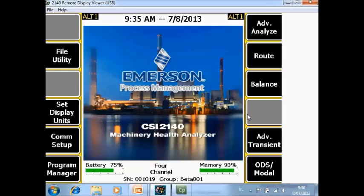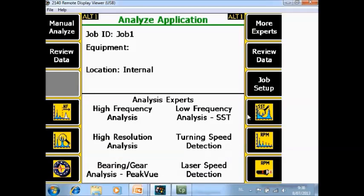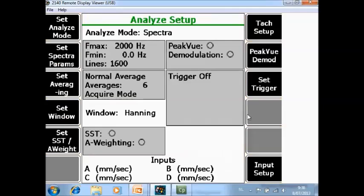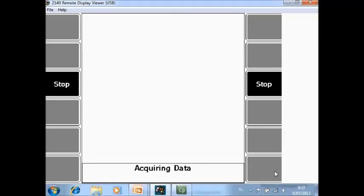On the home screen of the analyzer go to F7 Advanced Analyze, go to F1 Manual Analyze, and as you can see here I will measure from 0 to 2000 Hz 1600 lines with 6 averages on 4 channels. I will start a machine now, and I will collect data.